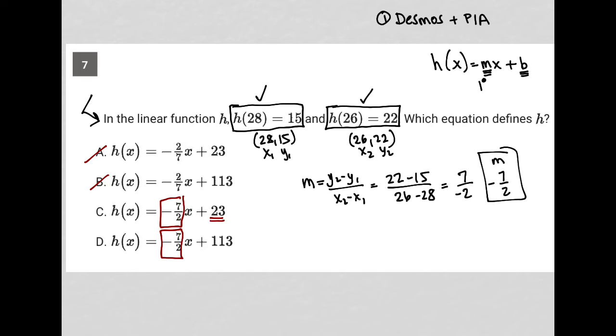So next is this y-intercept. Is it 23 or is it 113? So I'm going to go back to my structure here. And I'm going to say, well, as of now, I know that I have h of x equals negative 7 halves x plus b.